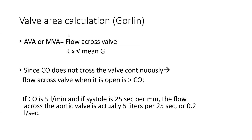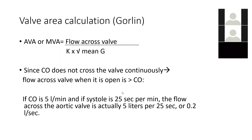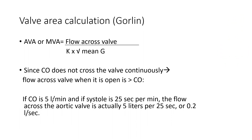The key idea is to understand the difference between flow across the valve and cardiac output. Flow across the valve is not exactly cardiac output. Imagine a cardiac output of 5 liters per minute crossing the aortic valve during systole — not during one full minute. If in one minute you have 25 seconds of systole and 35 seconds of diastole, the flow across the aortic valve is 5 liters per 25 seconds.